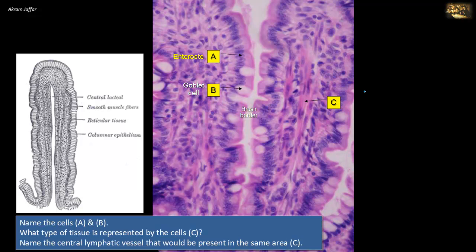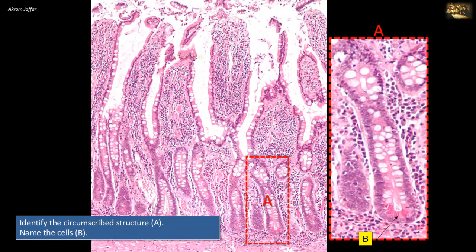The cells indicated by C are smooth muscle cells — smooth muscle fibers, extensions from the muscularis mucosa, which can be seen along the long axis of the villus. Identify the circumscribed structure A and name the cells B. This section shows features of the small intestine, where the mucosal surface has numerous finger-like projections called villi, while the mucosa between the bases of the villi is formed into crypts called the crypts of Lieberkühn, which are the structures represented in A — so A is an intestinal crypt.